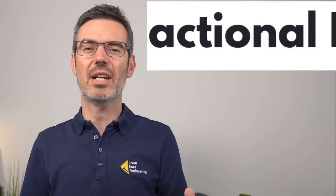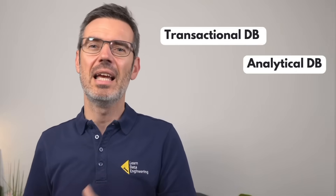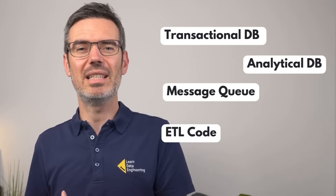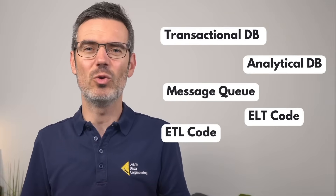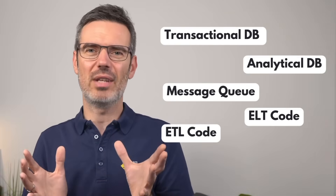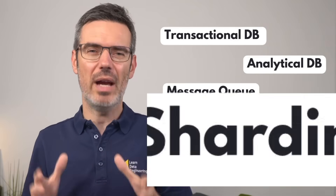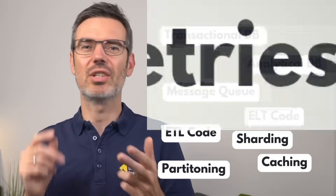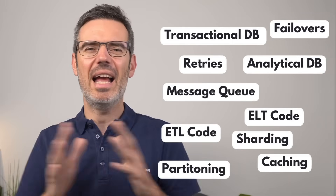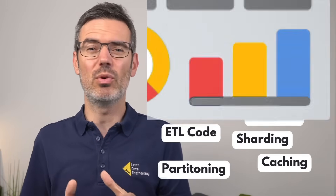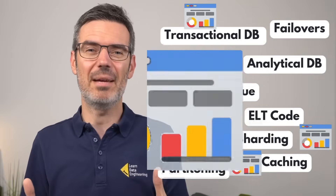So what did most teams do? They duct-taped everything together: one database for transactions, another for analytics, a message queue in between, a few thousand lines of ETL or ELT code to glue everything together. And because that's never enough, you add sharding, partitioning, caching, retries, failovers, and half a dozen dashboards just to figure out what broke this time. The result is a tech stack jungle — complex, fragile, and oftentimes very expensive.